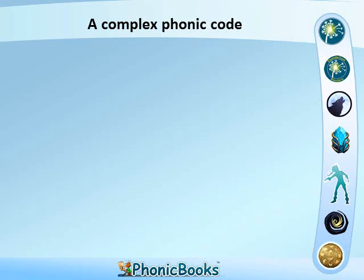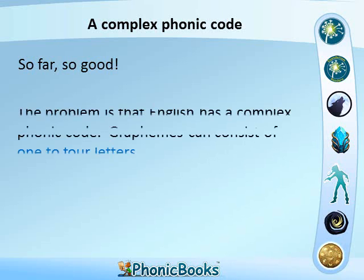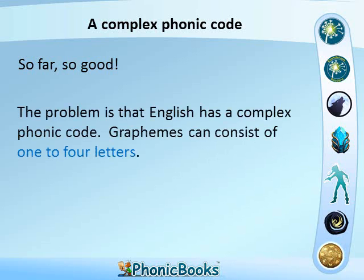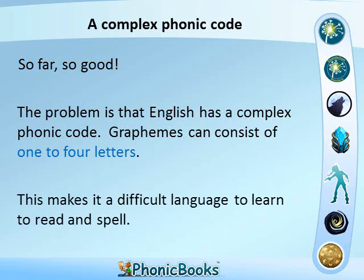A complex phonic code. The problem is that English has a complex phonic code. Graphemes can consist of one to four letters. This makes it a difficult language to learn to read and spell.